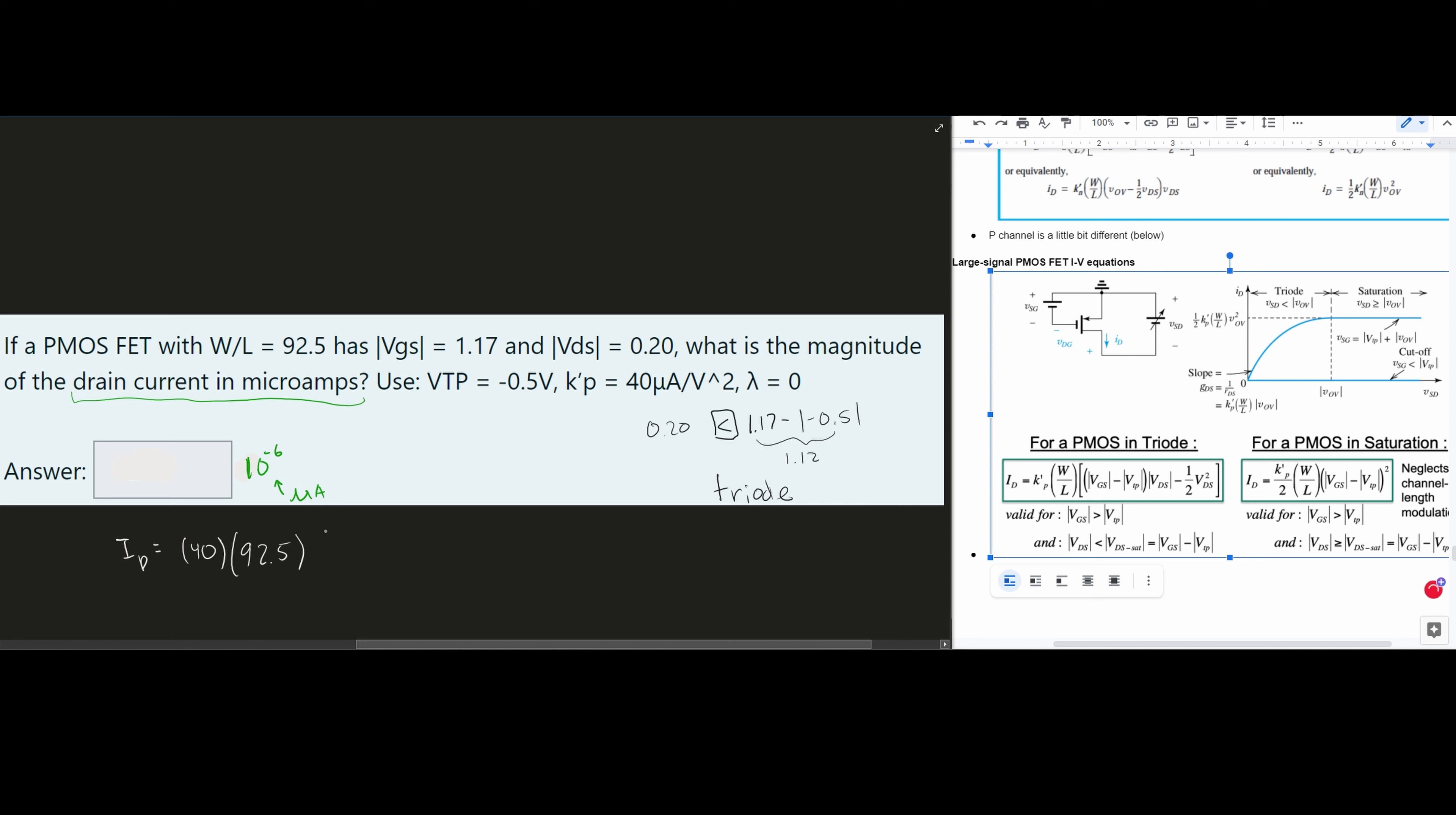We have our VGS minus VTP. Our VGS is going to be 1.17. And these are both in absolute values. So just remember that this is absolute value. And actually, I'm going to do that in a different color just to emphasize that afterwards. We have our VDS right here. So this is going to be 0.20. And then this is being multiplied by a VDS as well.